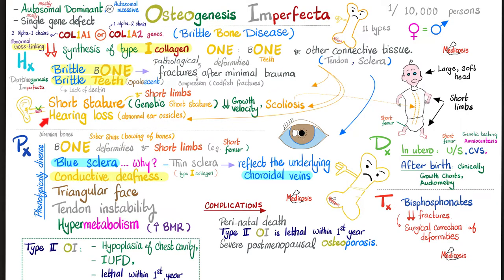If type 1 collagen is defective in bones, the bones weaken faster, leading to severe postmenopausal osteoporosis — since this osteoporosis has a cause, it's called secondary osteoporosis. Type 2 osteogenesis imperfecta is especially severe. It can lead to perinatal death or intrauterine fetal demise. There is hypoplasia — decreased growth of the chest cavity — leaving less space for lungs and heart, raising thoracic pressure, decreasing venous return, lowering cardiac output and blood pressure. Type 2 osteogenesis imperfecta can be fatal within the first year of life.